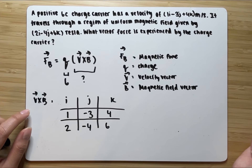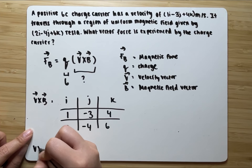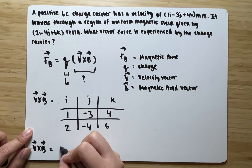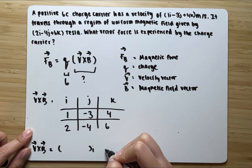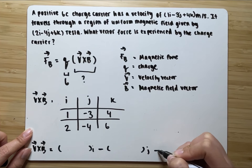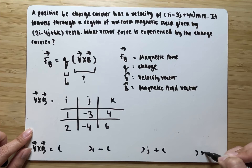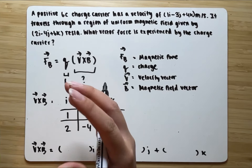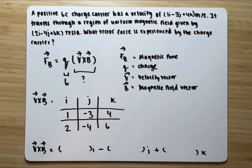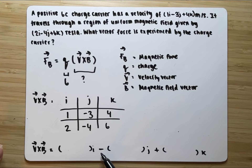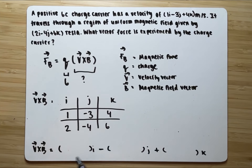Now we can find the i, j, k components. Our answer is going to follow the format: something i minus something j plus something k. Whenever we do our cross product, it always follows that pattern. This can eventually change from positive to negative depending on the calculation, but the foundation is always like this.